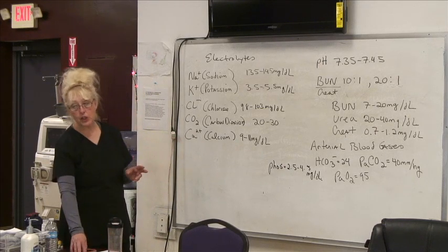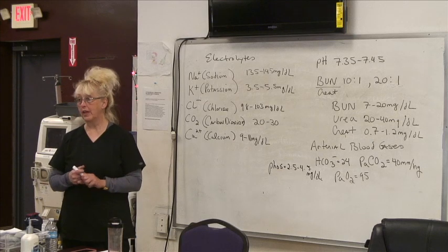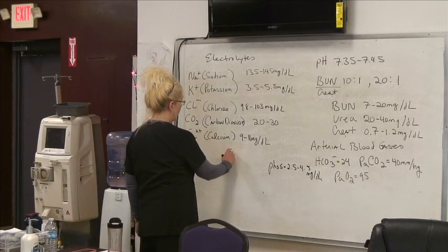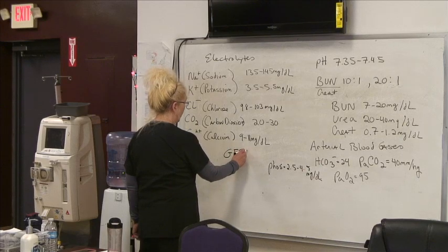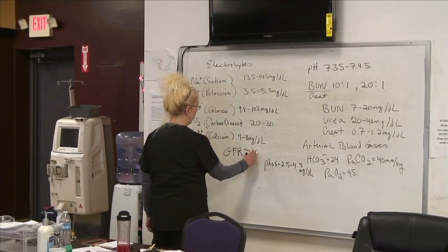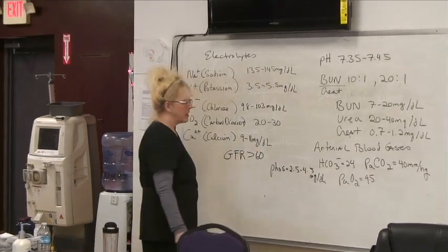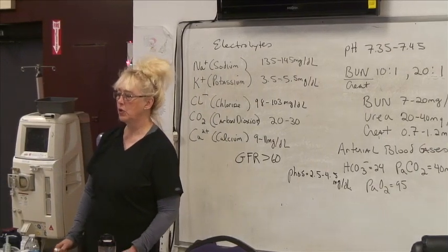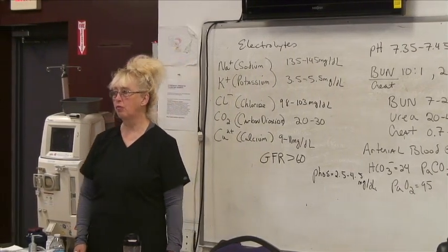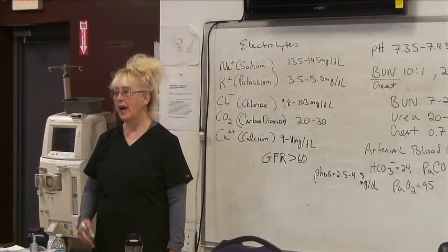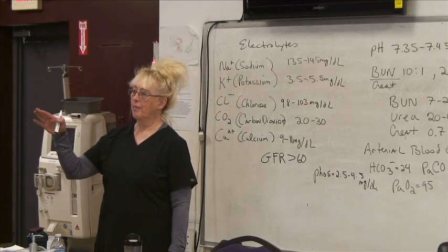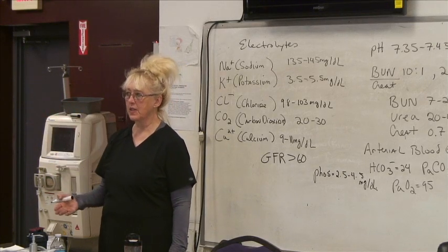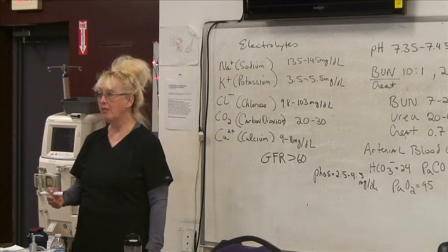Last week we mentioned the glomerular filtration rate, the GFR. We said the GFR in normal functioning kidneys is greater than 60. The units are similar to the Poiseuille theorem — the volumetric flow rate — as to how the flow in the kidneys is affected.